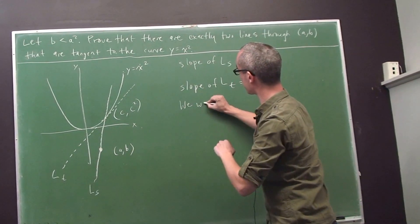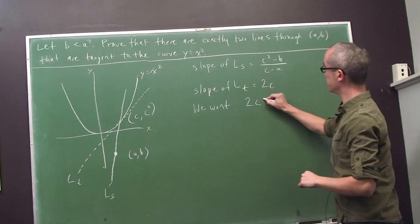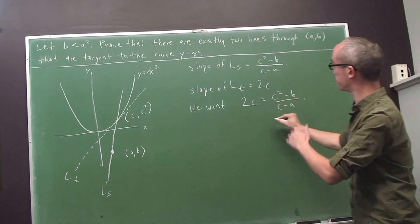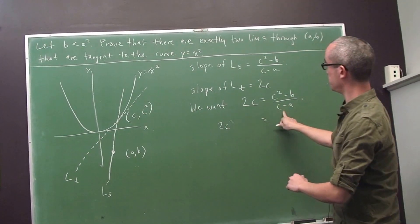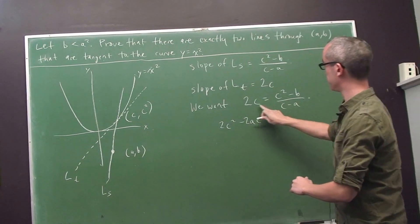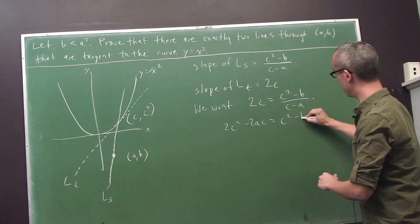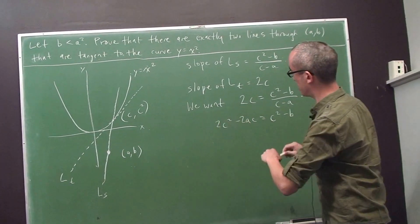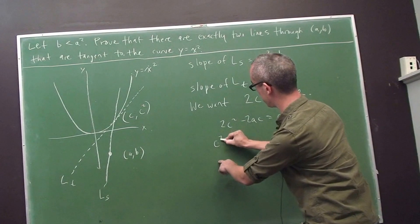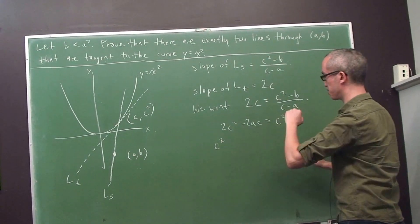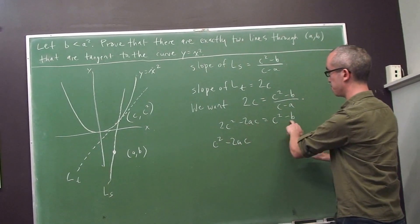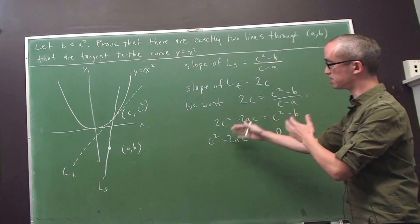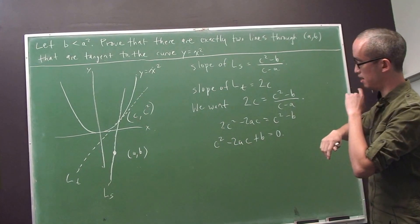So I cross multiply. I get, on this side, 2c² minus 2ac. On the right side, I've cleared the denominator, so I have c² minus b. Collecting everything on this side, I move the c² over here, I get 2c² minus c², which is c², minus 2ac plus b.